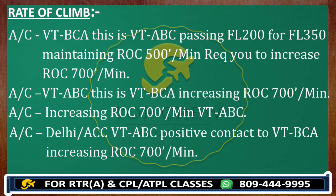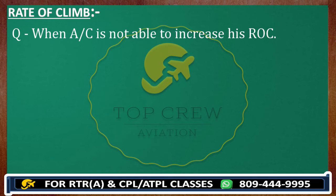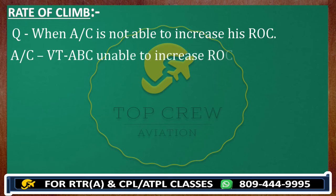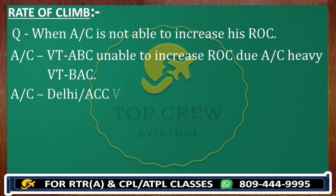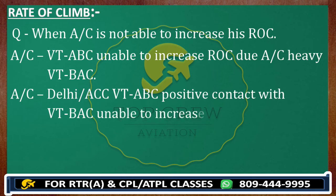Scenario number two is when the aircraft ahead is not able to increase its rate of climb. The aircraft would respond: Victor Tango Alpha Bravo Charlie, unable to increase rate of climb due aircraft heavy, Victor Tango Bravo Alpha Charlie. In that case, you inform Delhi Control: Delhi Control, Victor Tango Alpha Bravo Charlie, positive contact with Victor Tango Bravo Charlie Alpha, unable to increase speed due aircraft heavy, will maintain rate of climb 500 feet per minute.